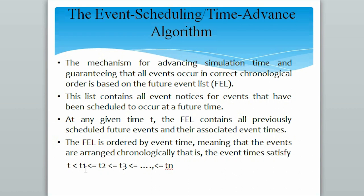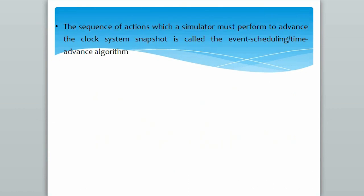Event times must satisfy the condition that t should be less than t1, and t1 should be less than or equal to t2, and so on up to tn. Here t is the current simulation time and t1 is the time at which the next event is going to occur.